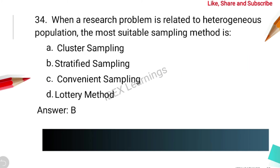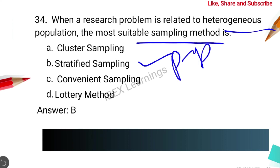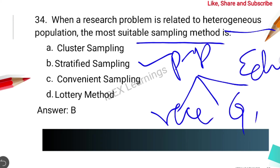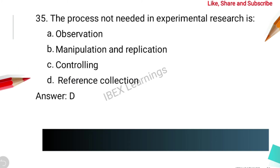The next question is: when a research problem is related to a heterogeneous population, the most suitable sampling method is? When you have a heterogeneous population, we use stratified sampling. The population is divided into subgroups based on shared characteristics such as race, gender, or educational achievement. For heterogeneous populations, stratified sampling is always used.